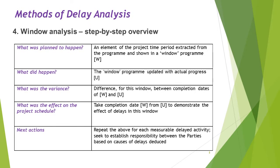Next, Window Analysis. What was planned? An element of the project time period extracted from the program and shown in a window program, W. What did happen? The window program updated with actual progress, U. What was the variance? The difference for this window between completion dates of W and U. What was the effect on the project schedule? Take the completion date W from U to demonstrate the effect of delays in this window. Next actions: repeat the above for each measurable delayed activity, then seek to establish responsibility between the parties based on the causes of the delays deduced.